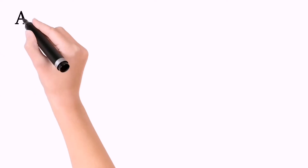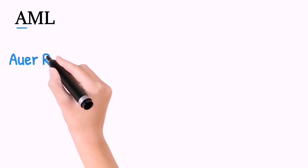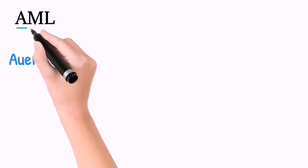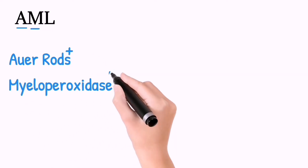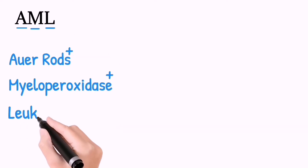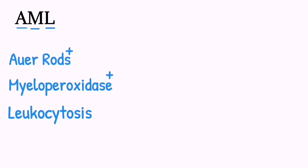In AML: A is for Auer rods, which are aggregations of myeloperoxidase that form crystals. M is for myeloperoxidase, which is a cytoplasmic enzyme present in myeloblasts of AML. L is for leukocytosis — that is raised TLC on CBC — and also for lymphadenopathy.